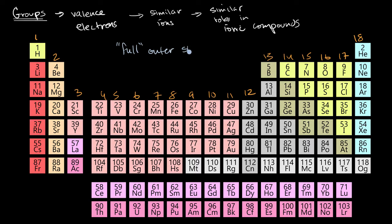People will refer to the octet rule. For our second, third, fourth, fifth, and on and on shells, you're full when you have eight electrons. The major exception to the octet rule is the first shell, which is full with only two electrons.